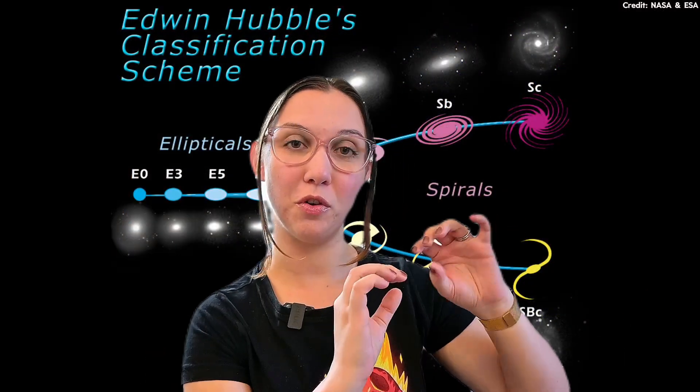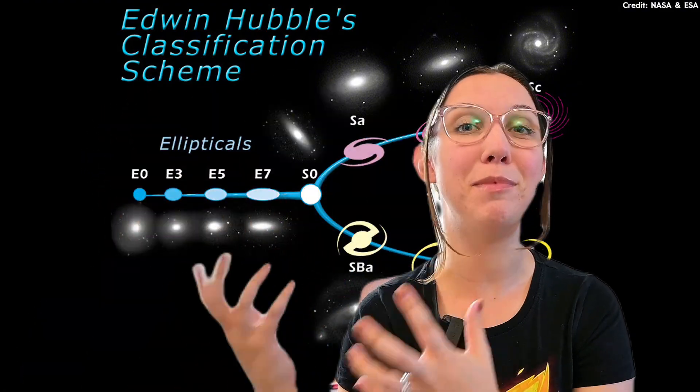Since then we've observed many more galaxies, and Hubble categorized them into two general types: flat spiral galaxies and blobby elliptical galaxies. With more powerful telescopes like the Hubble Space Telescope and JWST, we're seeing thousands of galaxies in the Hubble Deep Field, tens of thousands in the Hubble Ultra Deep Field, and even more in Webb's first deep field — showing there are trillions upon trillions of galaxies out there, which means there are bound to be some weird ones.